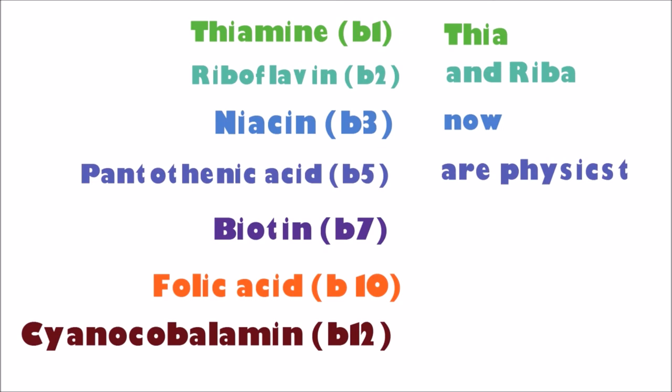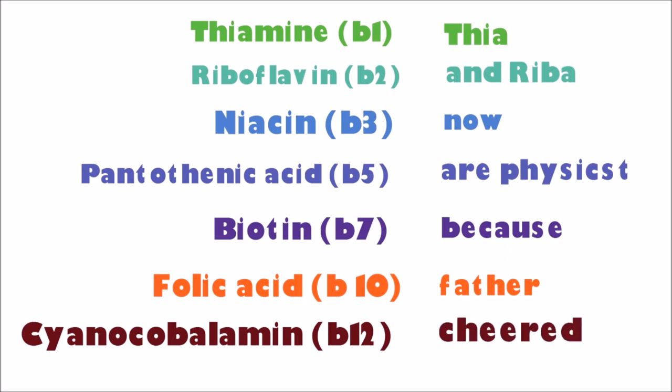The full trick is: 'Thea and Riba are Now Physicists Because Father Cheered.' If you look at the first letter of each word — T, R, N, P, B, C — it matches the first letters of Thiamine, Riboflavin, Niacin, Pantothenic Acid, Biotin, and Cyanocobalamin. Just make sure you remember the order: B1, B2, B3, B5, B7, B10, B12, so you insert the vitamins correctly.